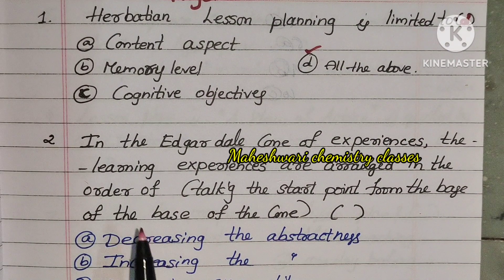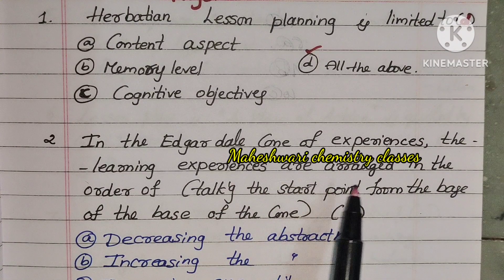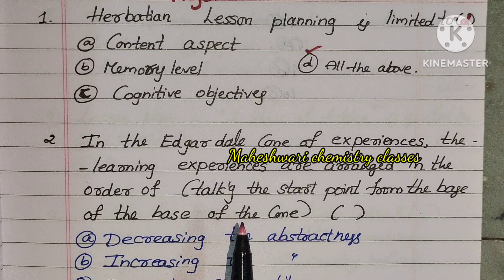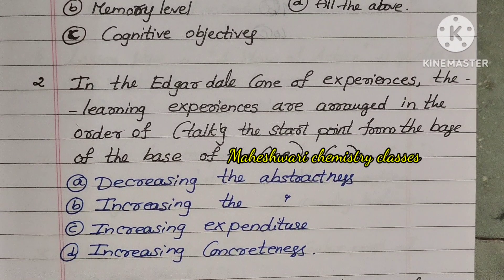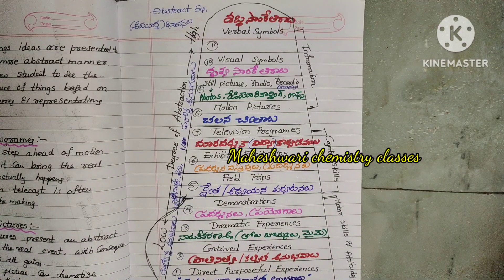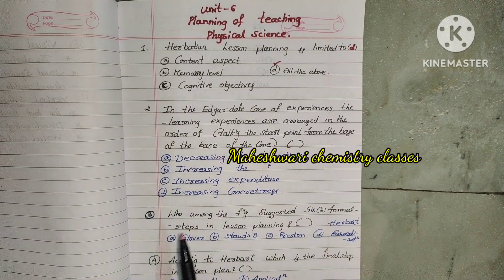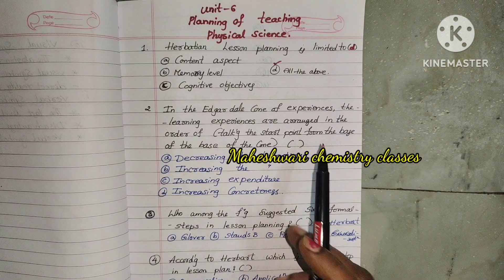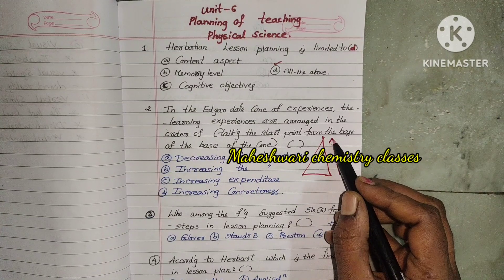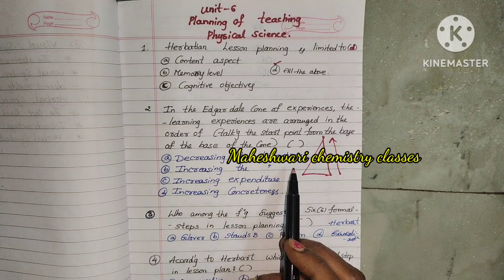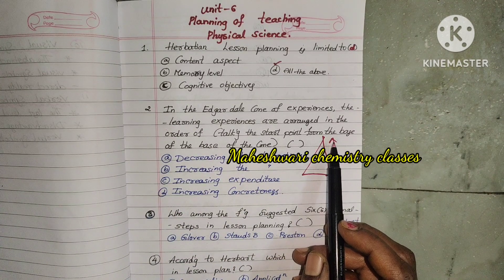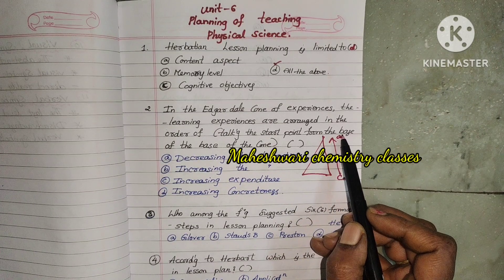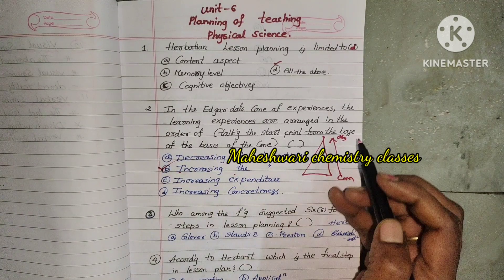Second question: In the Edgar Dale cone of experiences, the learning experiences are arranged in the order of — starting from the base of the cone. In the Edgar Dale cone, the options are: Decreasing the Abstractness, Increasing the Abstractness, Increasing the Expenditure, Increasing the Concreteness. If you move from concrete to abstract, Increasing the Abstractness is correct. Option B is right.